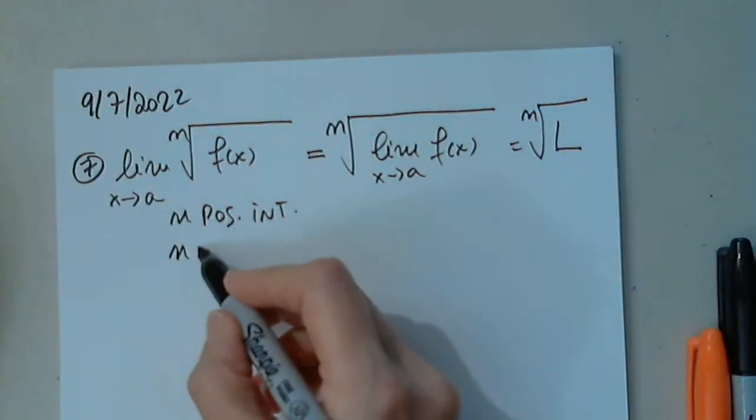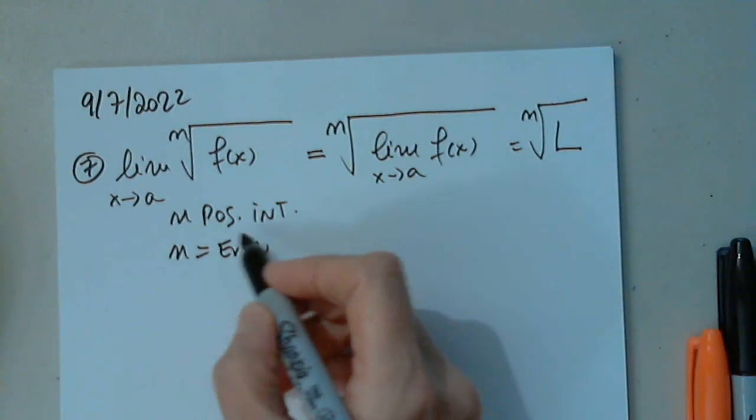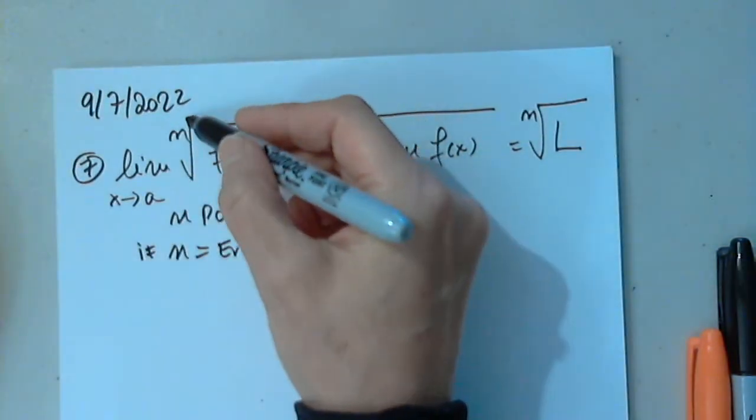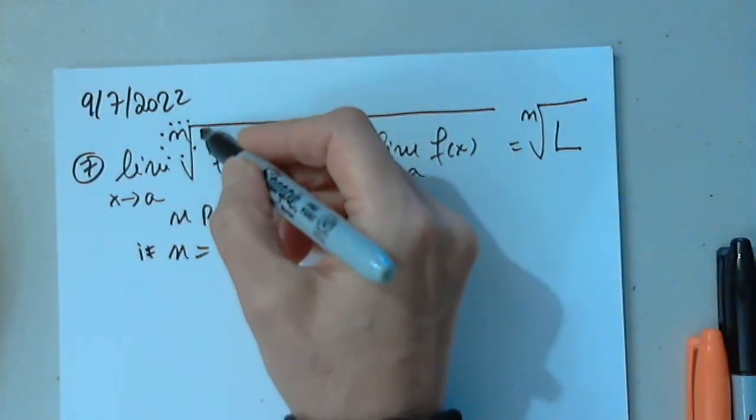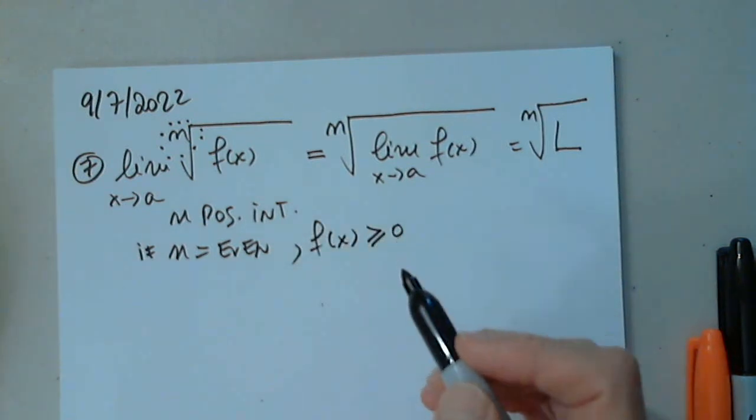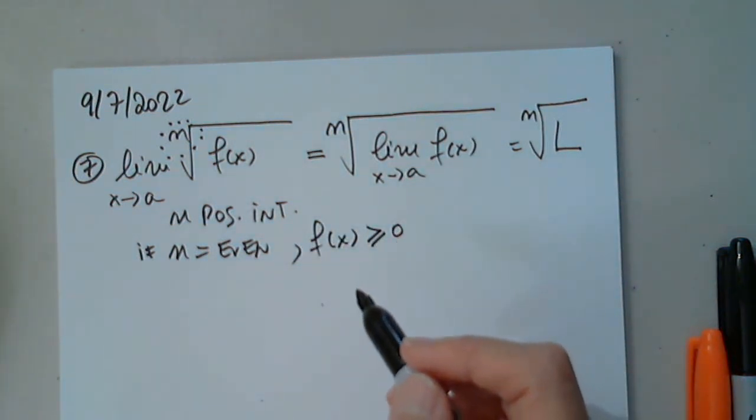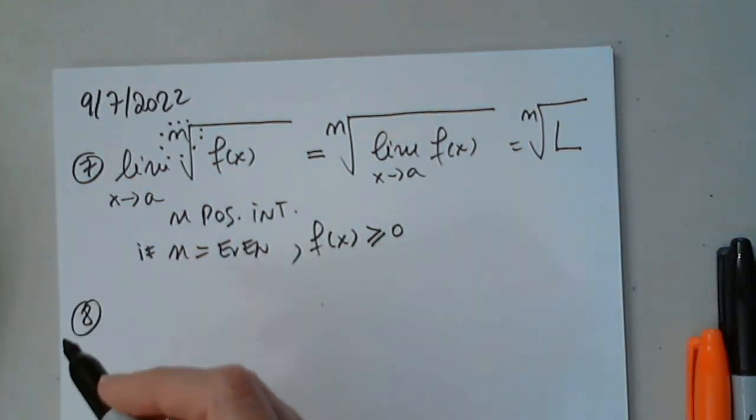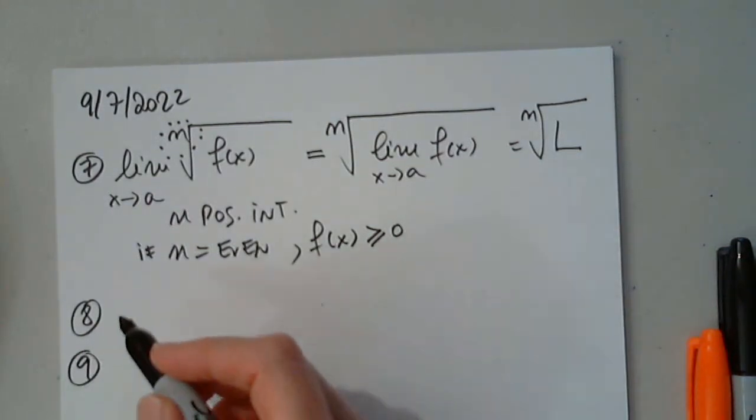Of course, if n is even, so if this is even, then f of x must be greater than or equal to zero. Okay. And I think the last two shouldn't even be there.